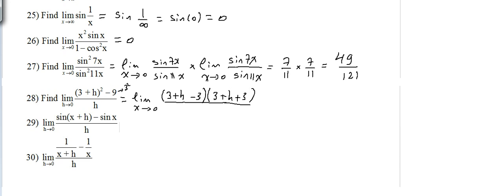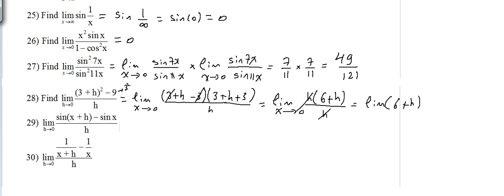The factorized form is (3 + h − 3)(3 + h + 3) over h. The 3 minus 3 gives 0, so what's left is h times (6 + h) over h. We simplify the h, leaving the limit of (6 + h) as h tends to 0, which is 6 + 0 = 6.